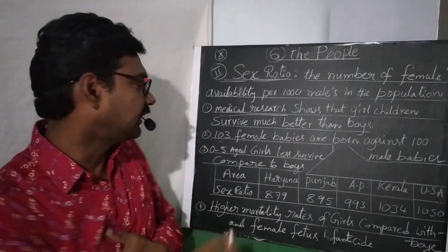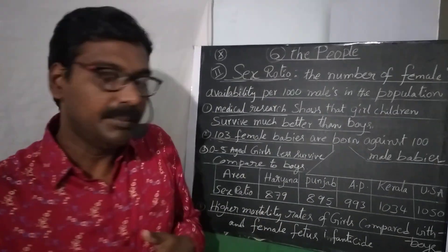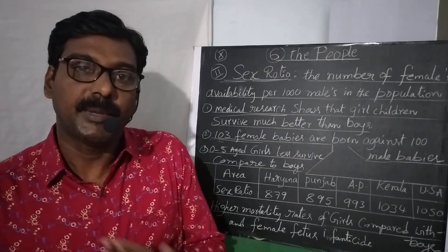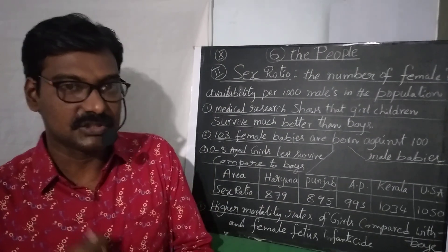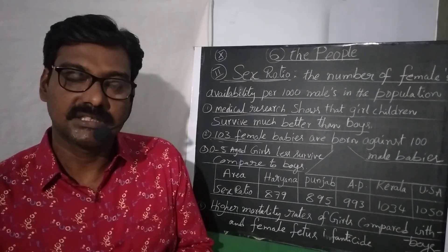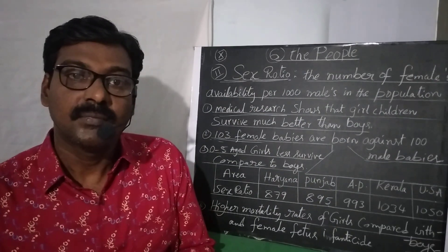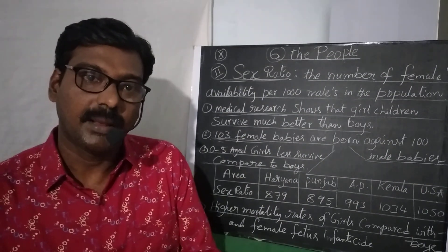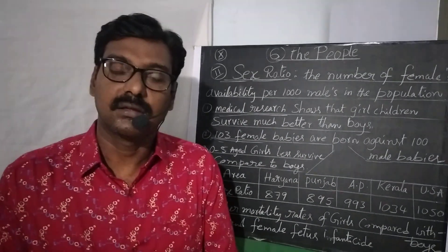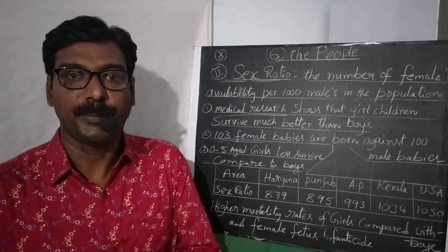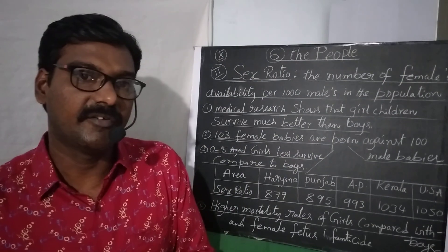For example, one survey shows that 103 female babies are born against every 100 male babies, meaning the birth rate of female babies is higher compared to male babies. So if there were no discrimination in society, the number of females would be higher than males. But we find the number of females is lower, which means there is bias between girls and boys in our society.